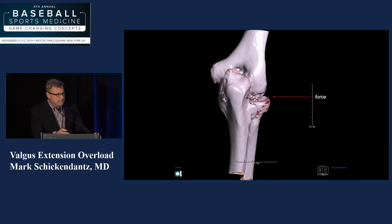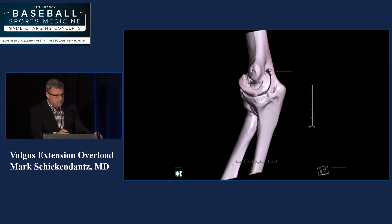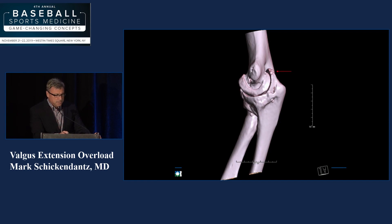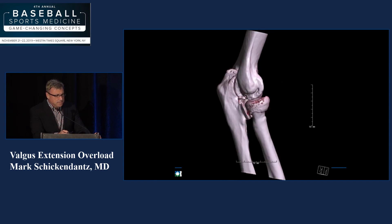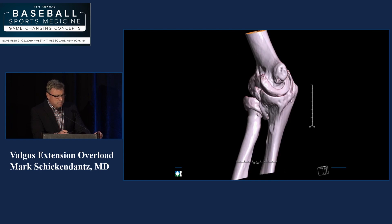This is what this looks like on a CT scan. You can see the force coming in from the lateral side — this was explained in Dr. Chalmer's talk. You can see where the compression would be on the lateral side, and tension on the medial side as this force crosses the joint. This is the area where we typically see these osteophytes — valgus extension overload osteophytes — in the posterior medial aspect of the tip of the olecranon. This is an actual CT scan from one of our starting pitchers. You can see the lateral side disease here as well. This is a pretty advanced example, and you can see the posterior medial osteophyte.